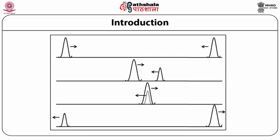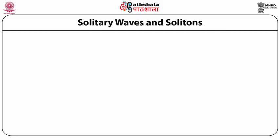In this figure, we can see that two waves come towards each other, they collide, and after collision they emerge with their original shapes intact. These are solitary waves and solitons. Let us discuss solitary waves and solitons in detail.